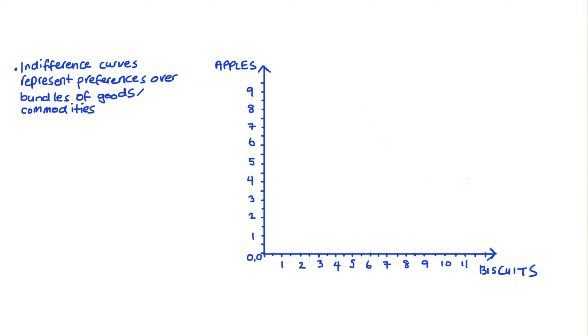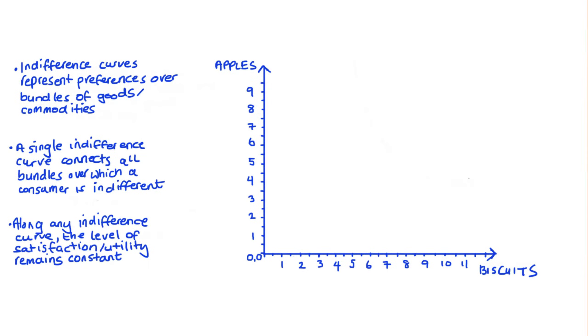In particular, a single indifference curve will connect together different bundles of goods or commodities over which a consumer is indifferent. And it follows from this that along any indifference curve, the level of satisfaction or utility that a consumer gets from their consumption remains constant.